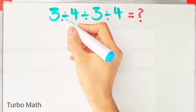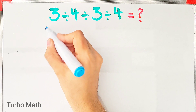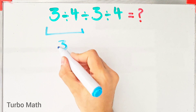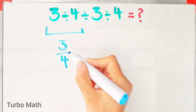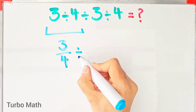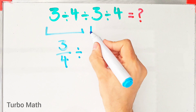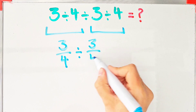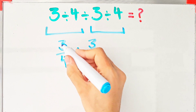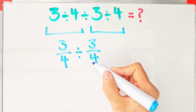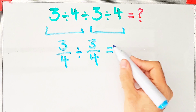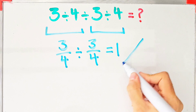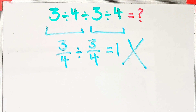3 divided by 4 equals 3 over 4. 3 over 4 divided by 3 divided by 4 equals 3 over 4, and the final answer of this part equals 1. But this answer is definitely wrong.